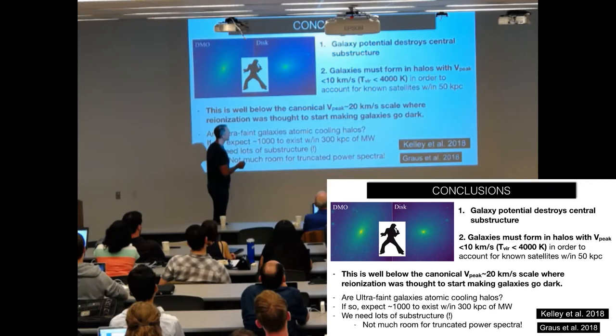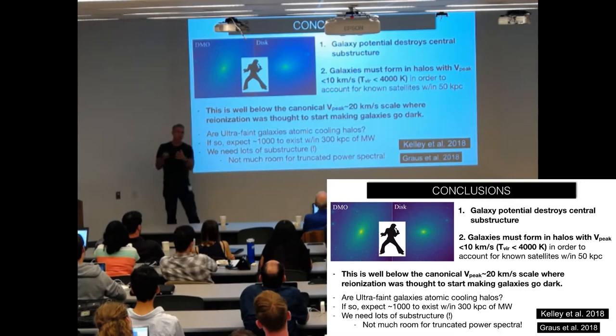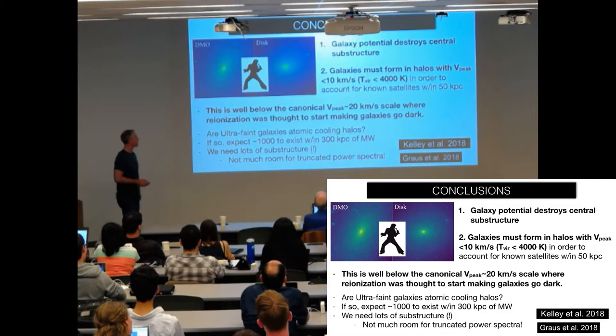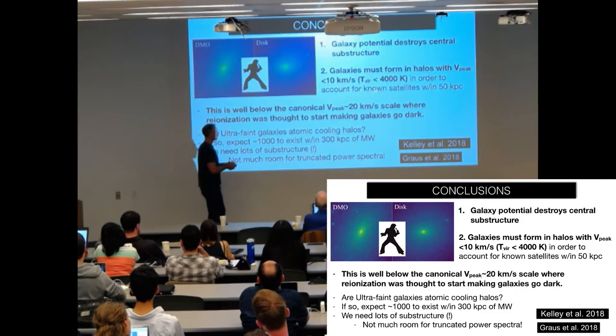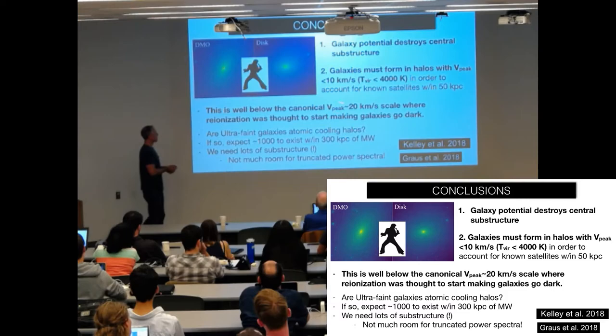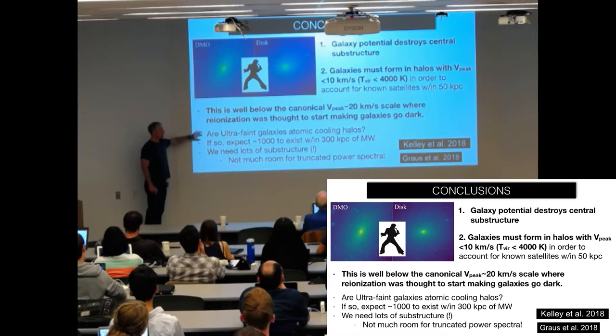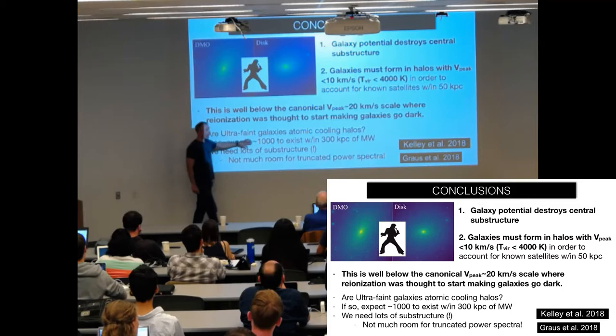So that's all I wanted to say. Okay, so the first takeaway is galaxy potential destroys stuff. And one of the things I didn't emphasize is you see this, of course, in many different hydrodynamic simulations, but it's not a function of some kind of feedback. All you have to do is put a galaxy in the middle of your halo and this happens. Just gravitationally it destroys the stuff. Just by counting known systems, the galaxies that we know about now, you have to be populating lots of galaxies in halos with v-peak well below 10 kilometers per second. So this is below the atomic cooling limit. Definitely well below this canonical 20 kilometers per second scale where people were thinking halos should be going dark. And so, this suggests, are these ultra faint galaxies really atomic cooling halos? They seem like they're probably molecular cooling halos. If so, by the way, we expect there to be about 1000 of them within 300 kiloparsecs.